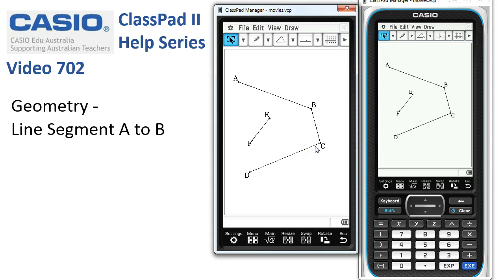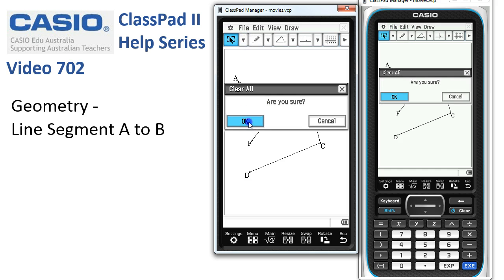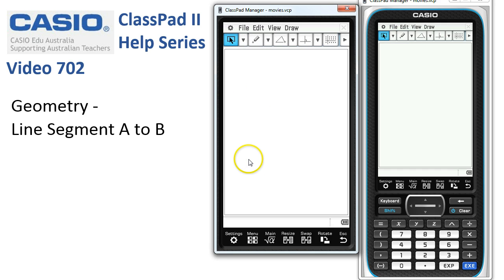We're going to tap on the geometry application and start as usual with a file, new, OK, to just reset our drawing screen.